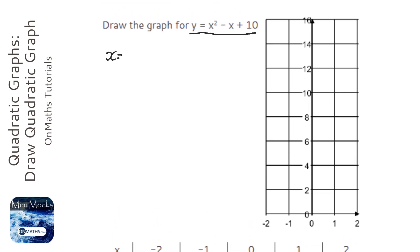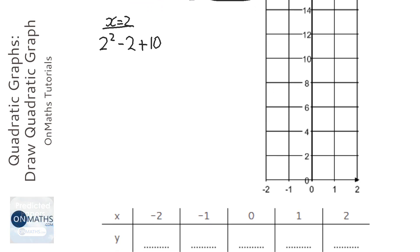So when x equals 2, what I want to type into my calculator is 2 squared minus 2 plus 10. And it's exactly the same as the equation at the top, but instead of x, it's going to be 2. Now I can do this in my head: 2 squared is 4, 4 take away 2 is 2, and 2 plus 10 is 12.